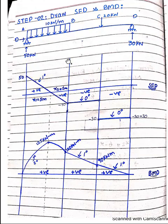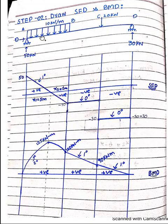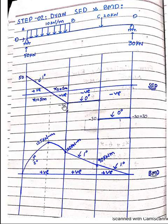Starting with 50 kilonewton acting upward at A. Since the UDL of 10 kN/m acts downward over 6 meters, 50 minus 60 gives minus 10 — moving linearly downward across span AB. In the next portion, the 20 kilonewton point load acts downward: minus 10 minus 20 gives minus 30. Moving through span CD with no other load, minus 30 plus 30 gives zero shear force at the roller support.